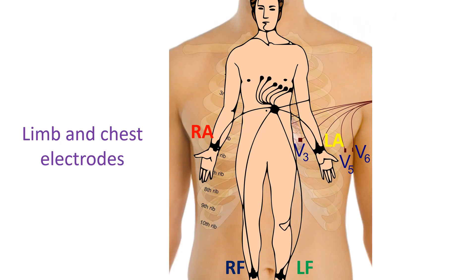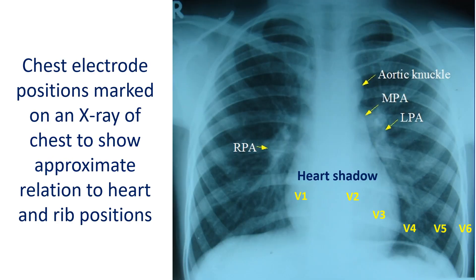ECG uses 4 limb electrodes on each of the 4 limbs, of which the electrode on the right leg is considered electrically neutral, while the other 3 are active electrodes. In addition to this, 6 electrodes are placed on specifically designated parts of the chest to get chest lead recordings. Though there are only 10 electrodes used for recording a usual ECG, various electrode combinations can be recorded so that the most common recording is a 12-lead ECG.